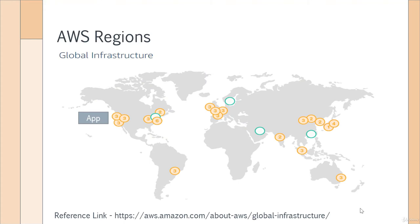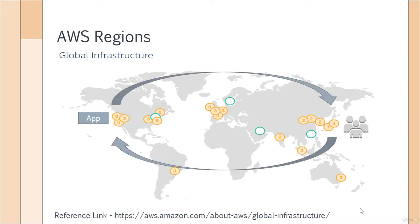Let's go back to our map. Let's say you have your application hosted in the Oregon region. Let's say your users are situated at the other end of the world — let's say in the Asia region. Imagine the latency or the amount of time it would take for the request and the response to travel across the world from your application to your end users. Wouldn't it be more beneficial if you actually host the app closest to your users? That's why AWS has developed a presence across the world in different geographic locations known as regions.